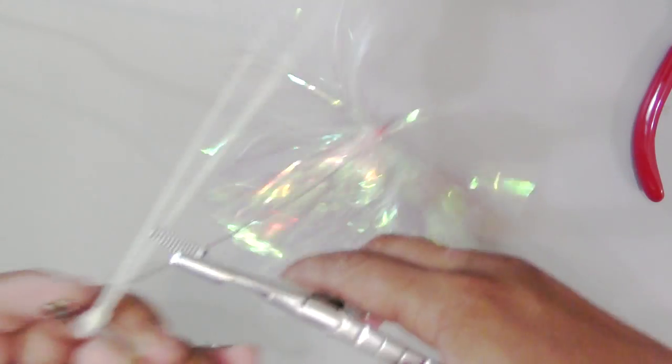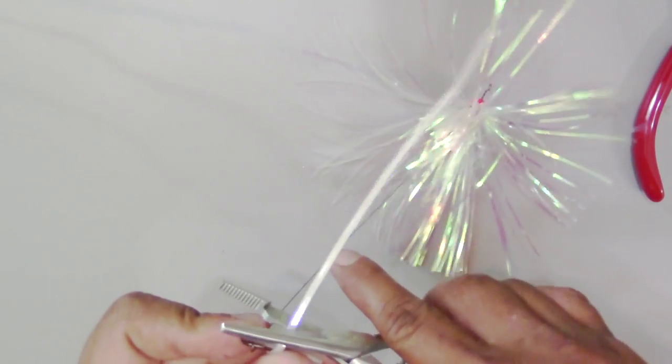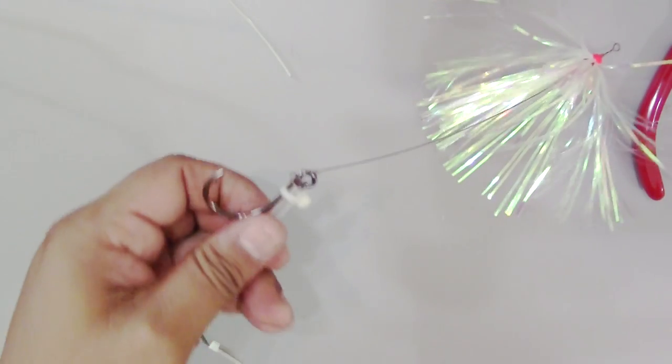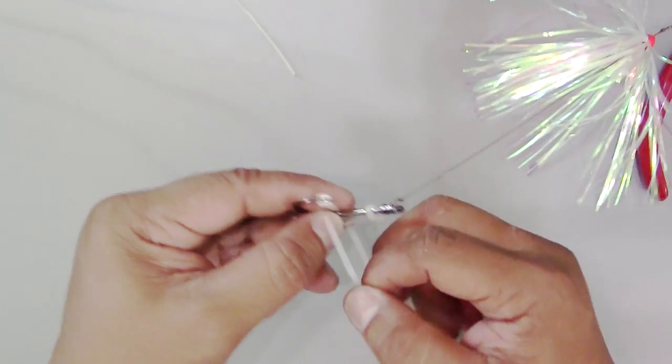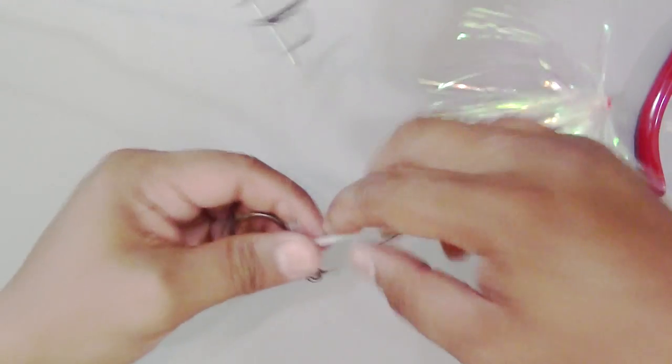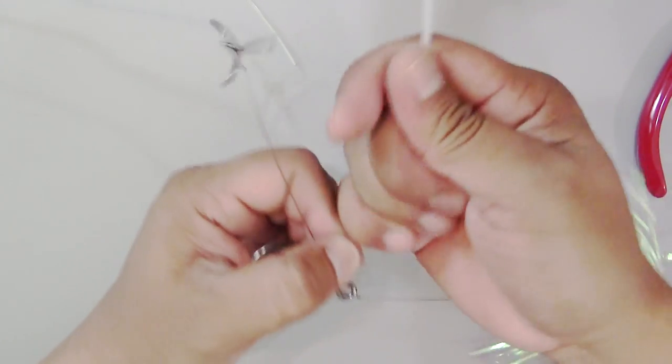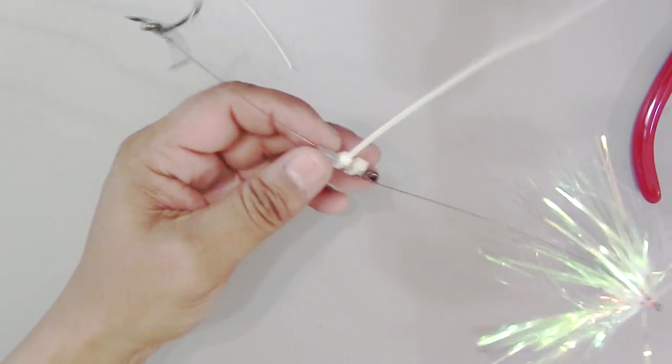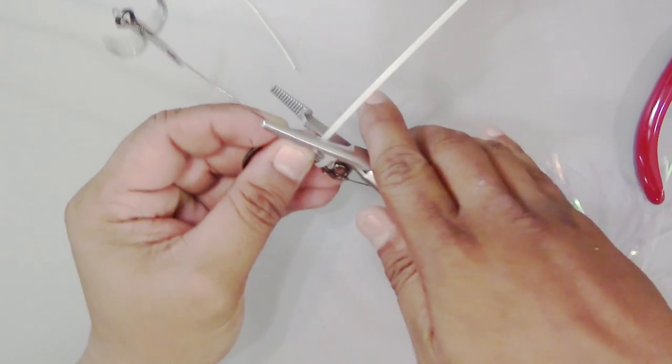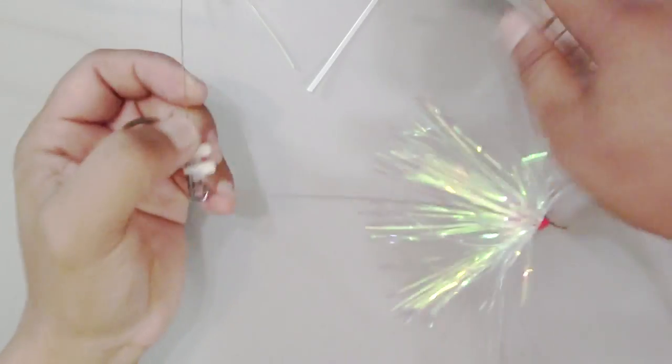So, tighten that up. Cut the excess off as close as possible. And then I have another one. Like that. As tight as possible. That sucker's not going anywhere.